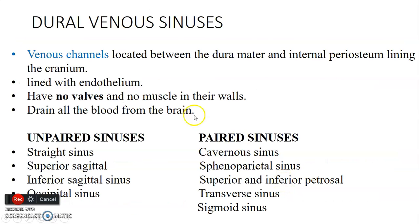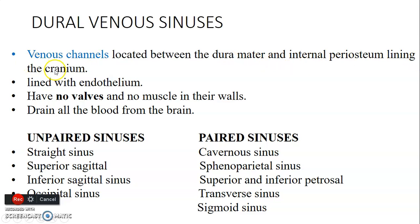The dural venous sinuses are channels of venous blood between the two layers of dura mater — the meningeal layer and the endosteal layer — and the internal periosteum lining of the cranium. They are lined by endothelium. Importantly, unlike veins, they have no valves and no muscle in their walls. They drain all the blood from the brain.